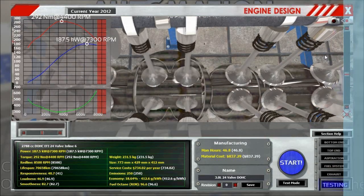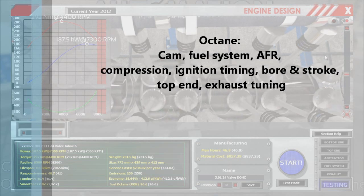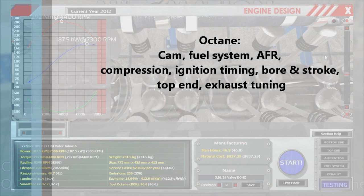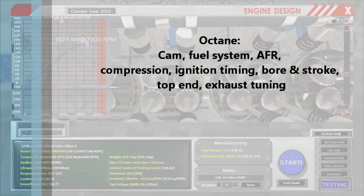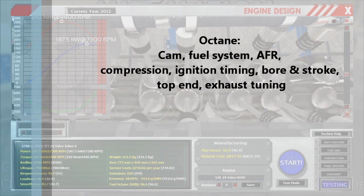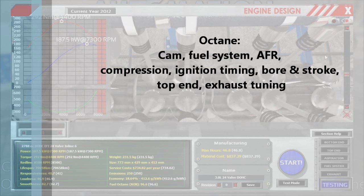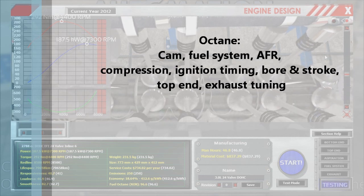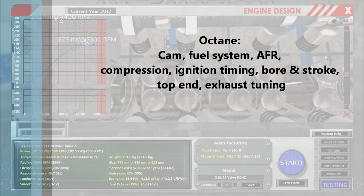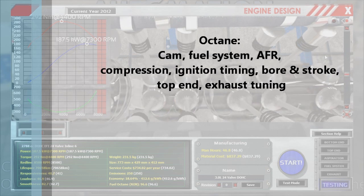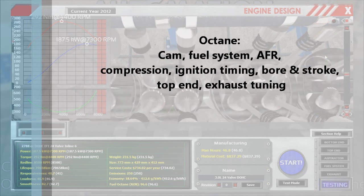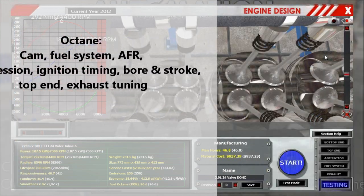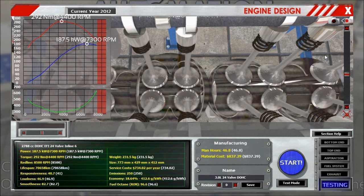Octane is our last stat. A higher cam profile gives you a bit of leeway, and a better fuel system decreases your octane requirements. Lower compression is one of the main factors — if you run into octane problems, just lower compression as a first step, as that's usually the most simple solution. Lower ignition timing gives you less octane requirements. A smaller bore helps get octane requirements down as well. Having a better top end with better extraction and intake does help lower octane slightly. And don't forget exhaust tuning — fool around with that setting to see what it does for octane, as there can be quite a significant difference.